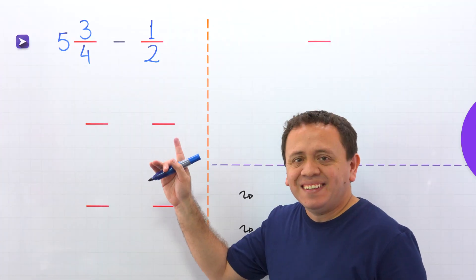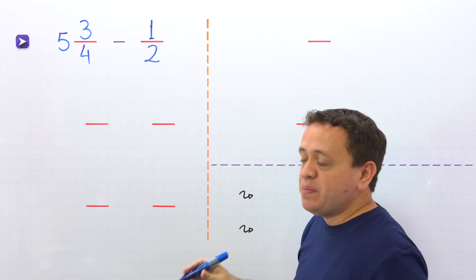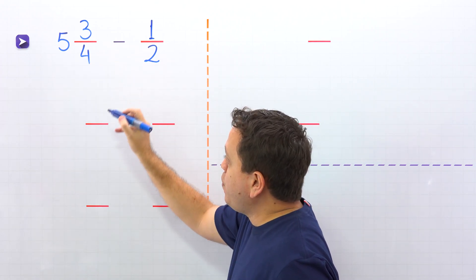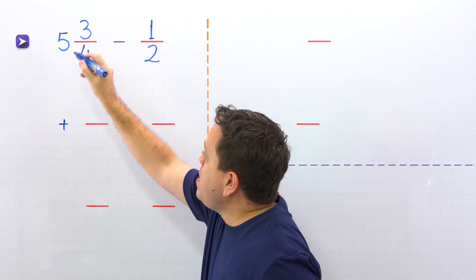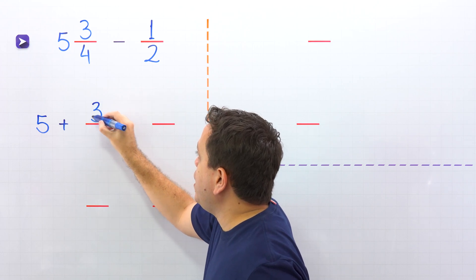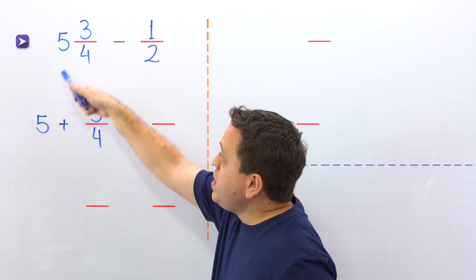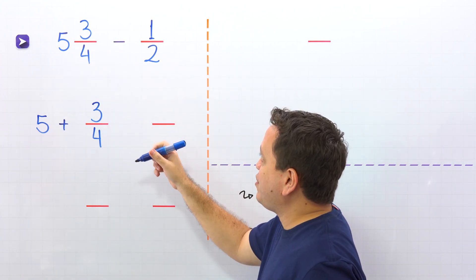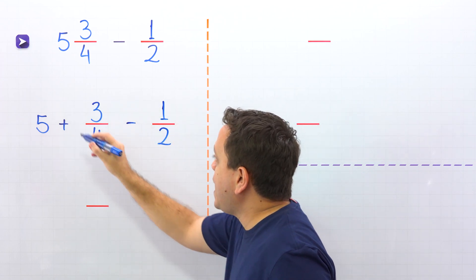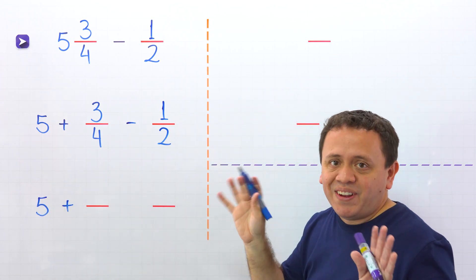Let's move on to another example. In this example, we need to subtract 5 and 3 fourths minus 1 half. Once again, we are going to subtract a mixed number and a fraction. Let's start by rewriting the mixed number 5 and 3 fourths as the sum of a whole number, 5 in this case, and a proper fraction, 3 fourths. Then we have the minus sign and the fraction 1 half. Now we need to subtract these two fractions with unlike denominators, so we need the least common denominator.